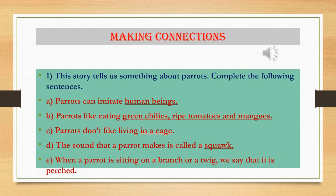Making Connections: fill-ups are given under this heading. This story tells us something about parrots. Complete the following sentences: Parrots can imitate human beings. Parrots like eating green chillies, ripe tomatoes and mangoes. Parrots don't like living in a cage. The sound that a parrot makes is called a squawk. When a parrot is sitting on a branch or a twig, we say that it is perched.